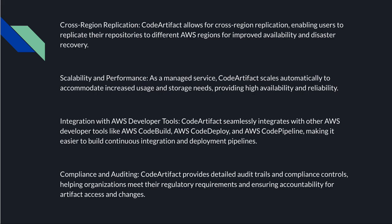Code Artifact can also replicate repositories to different AWS regions for improved availability and disaster recovery. It automatically replicates your packages across multiple regions, allowing you to create DR environments. This increases fault tolerance and high availability — if any region is experiencing issues, you can be up and running in another region. It also helps reduce regional latencies if you are running your application across multiple geographies.